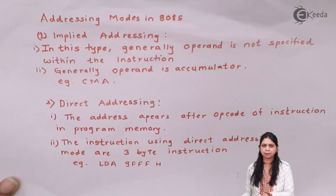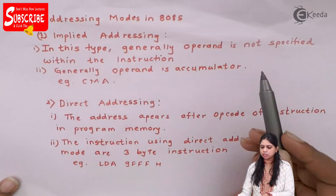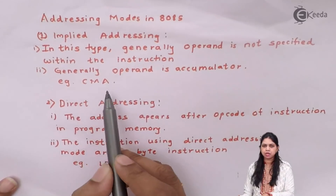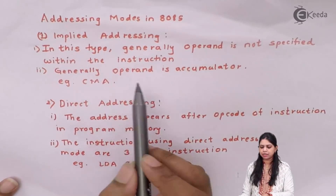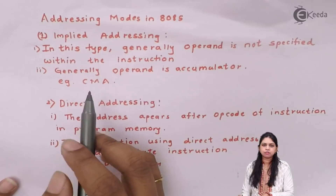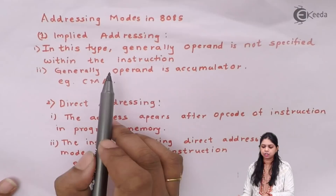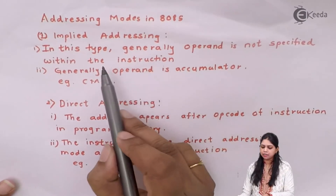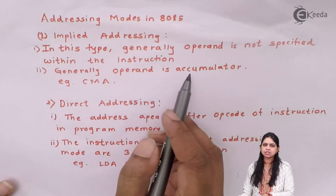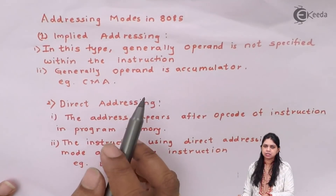Number one is called implied addressing mode. In this type, the operand is not specified within the instruction and the operand is the accumulator. For example, CMA — CMA is your opcode, but there is no operand written after it. Instructions without an operand come under the category of implied addressing mode.